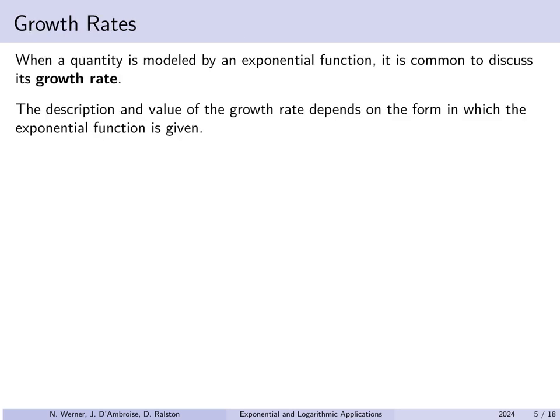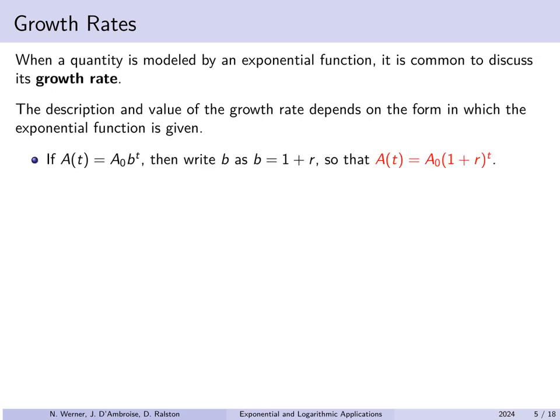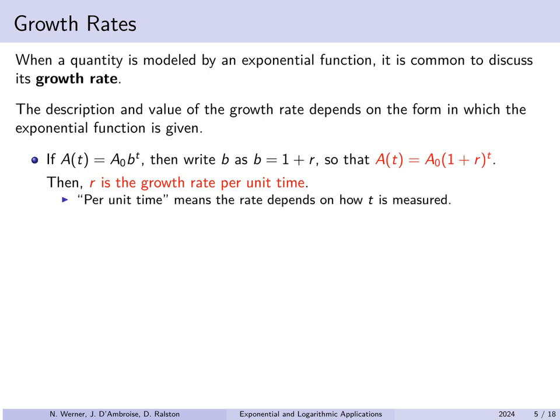When we have an exponential function modeling something, a common term is growth rate. The description and value of the growth rate depends on the form of the function. When you have a(t) = a₀ · bᵗ and rewrite b as 1 + r, giving a₀ · (1 + r)ᵗ, then r is called the growth rate per unit of time. If t is measured in years, that's an annual growth rate; in days, a daily growth rate, and so forth.